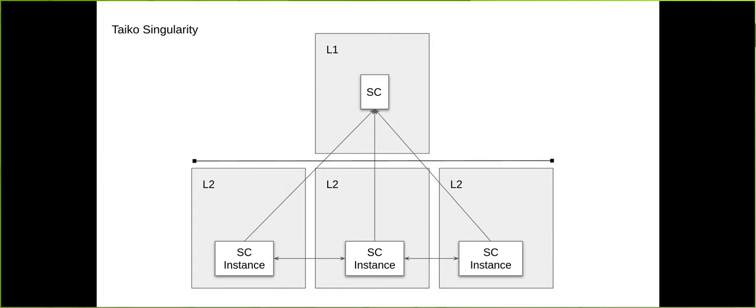Q: What about cross-chain games — could a player on one chain battle someone on another? A: Yes, in principle — for example a game deployed on Taiko and Scroll where players can trade items across chains. Though if communication between L2s is frequent for every action, it becomes harder to parallelize. The best case is doing most computation within one L2 and occasionally communicating with another.